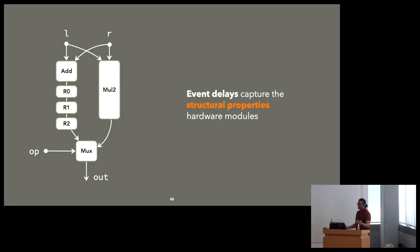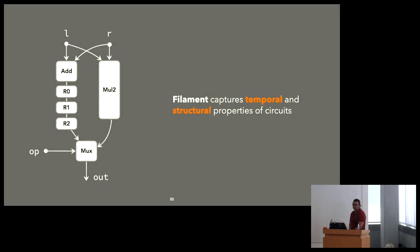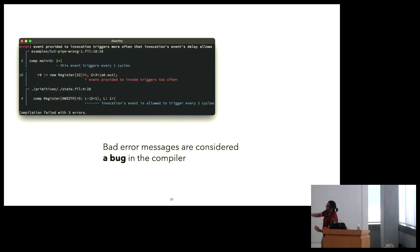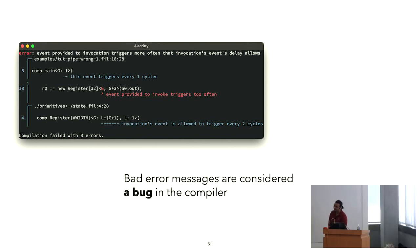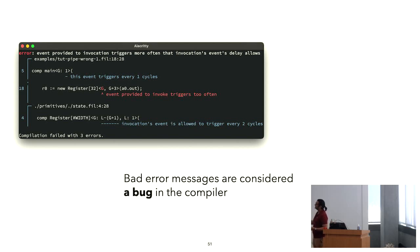Event delays are capturing the structural property — that's the important part of Filament. Filament captures temporal and structural properties for your circuits. We really care about error messages. I was showing you all of these nice error messages — they're not made up. We spend a lot of effort making sure the error messages provide useful information. We have it in our build manifesto that bad error messages are considered a bug in the compiler. A lot of the experience of writing programs in typed languages is that you get a lot of errors. Some people say, I should just write SystemVerilog, it doesn't give me errors. Well, that's a problem — it lets you build garbage things, whereas Filament will not let you build garbage things, but it will give you complex error messages that are meaningful and useful.